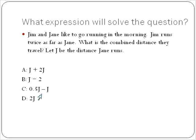The first expression says j, or the distance Jane runs, plus 2 times the distance Jane runs. That shows Jane's distance, the first one, and this would be Jim's distance. 2 times Jane's distance is equal to Jim's. So this first expression, j plus 2j, gives us the expression that will solve this question.